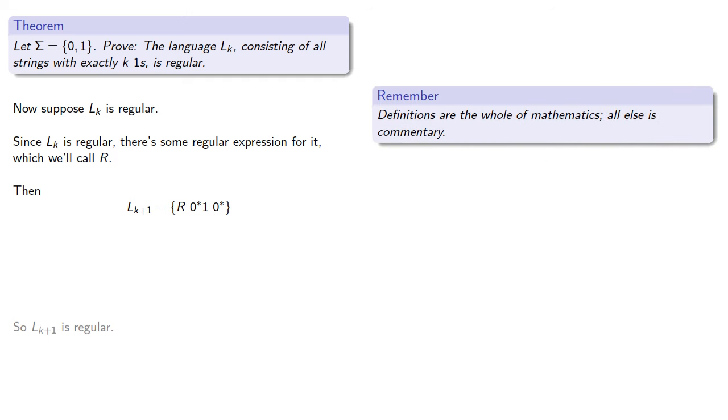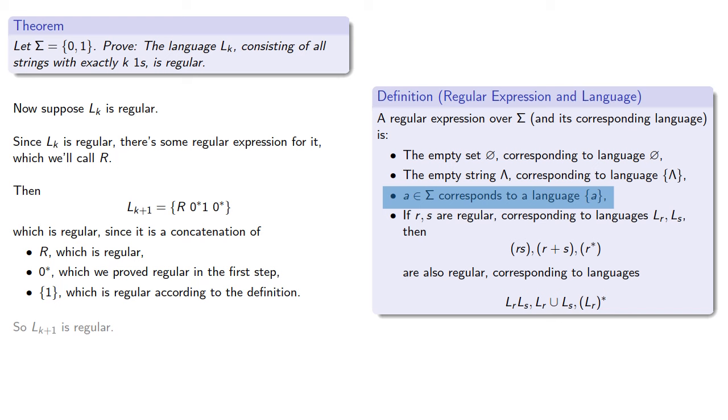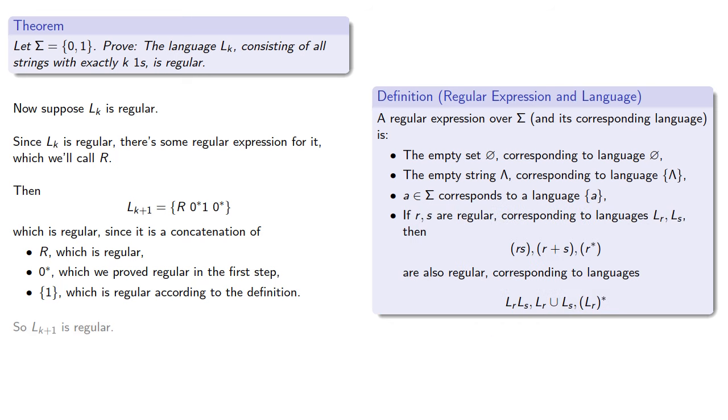Remember, definitions are the whole of mathematics, all else is commentary. So let's pull in our definition of regular language again. And we note that this is regular because it's a concatenation of R, which is a regular expression, zero star, which we proved regular in our base step, and the singleton one, which is regular according to the definition. And so it's a concatenation of regular languages, which is regular. And so Lk plus 1 is regular, which completes our induction step.